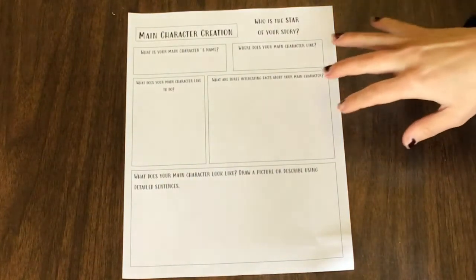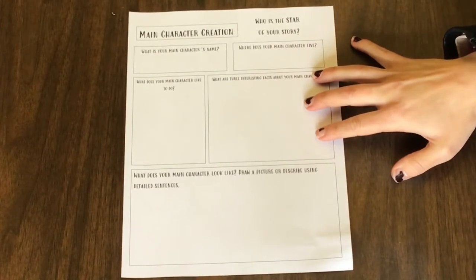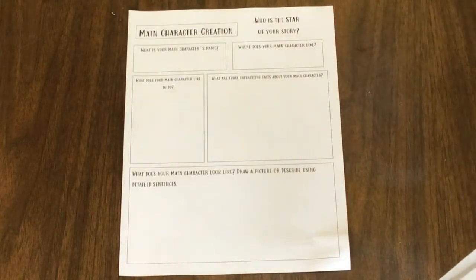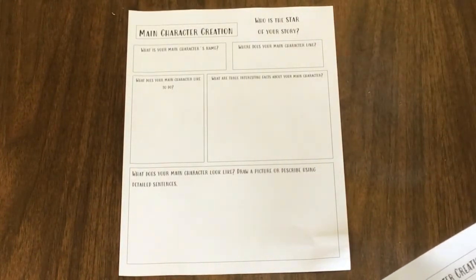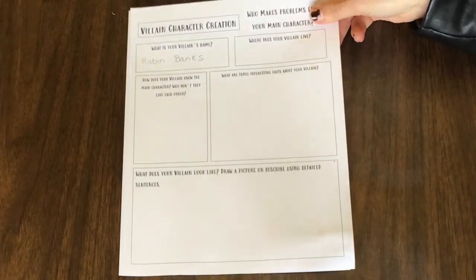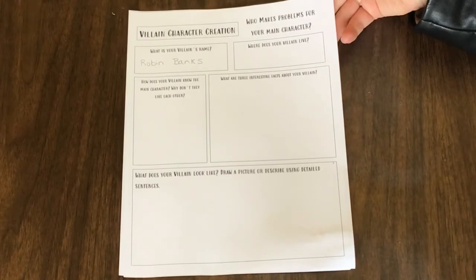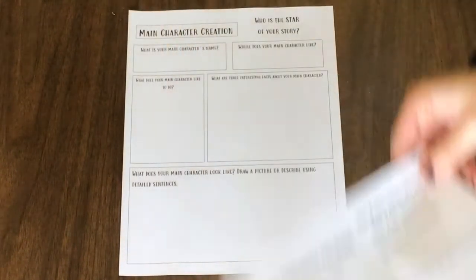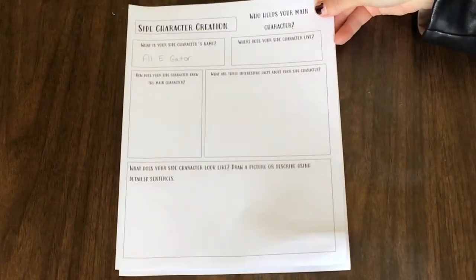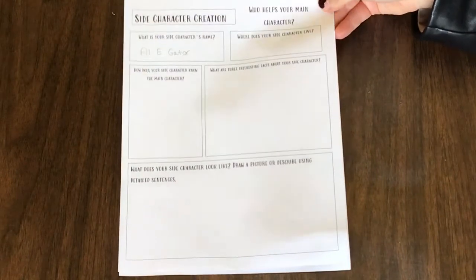The first type of character that I'm going to create is my main character, and the main character is the character that is the star of the story. So the story will mostly be about that character. I'm also going to create a villain who makes problems for my main character in the story. And then my main character is going to have a side character who helps your main character in the story.